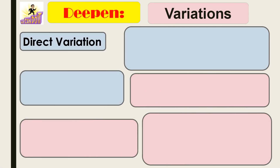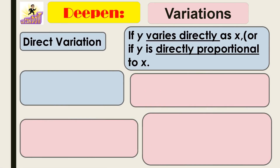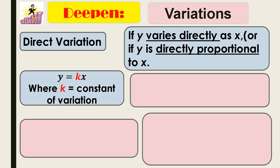Direct variation: if y varies directly as x, or if y is directly proportional to x, then y equals kx. That is their equation. Always remember that k is always a constant.